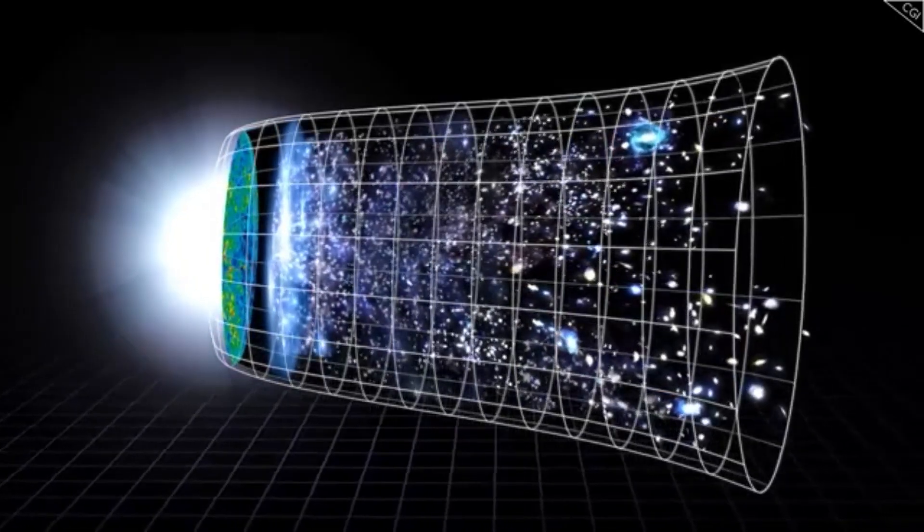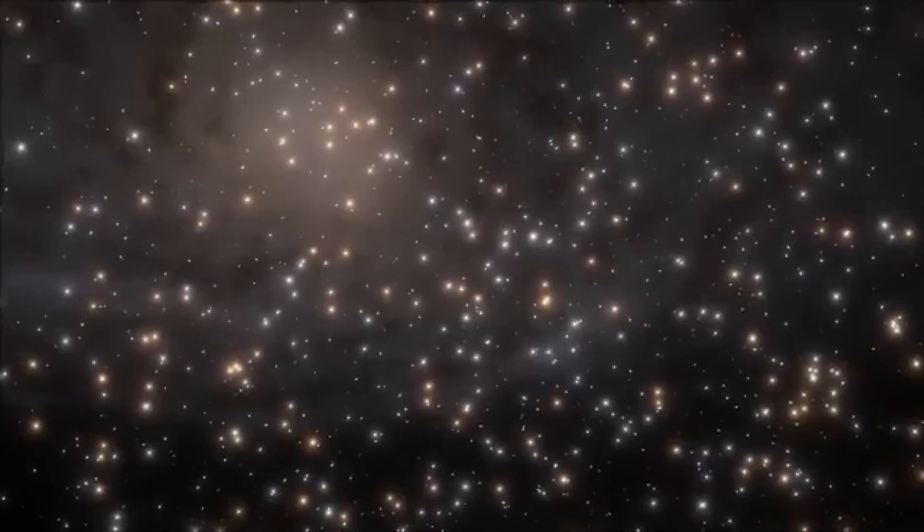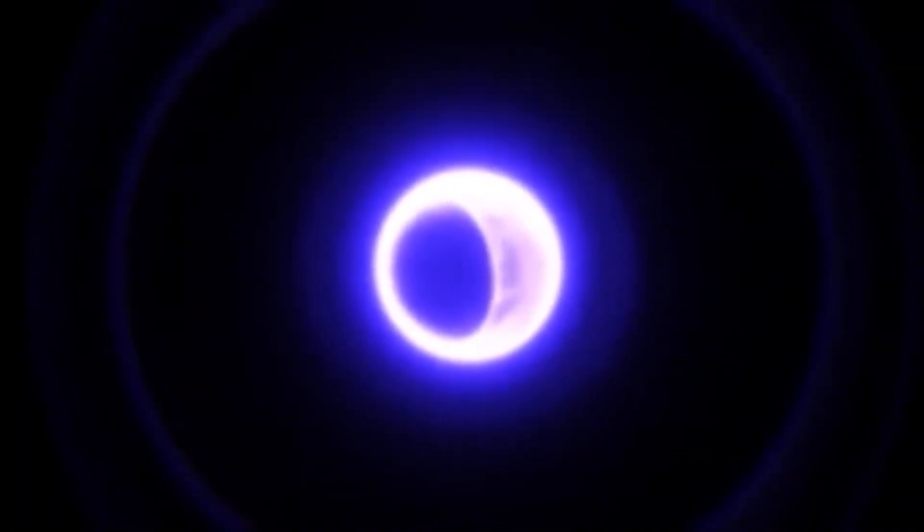As space expands, radiation like light waves not only becomes less concentrated but also stretches, leading to the universe cooling. If we rewind the clock, the opposite would occur. In earlier times when the universe was younger, it was denser and hotter.